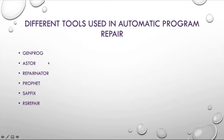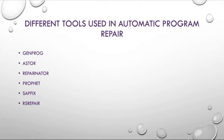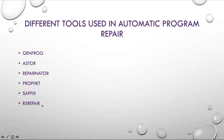Here are some of the different tools of automatic program repair. The first is Genprog, which is the earliest generate-and-validate bug fixing system for C programs. Aster is an automated repair library for Java and contains jgenprog, a Java implementation of Genprog. Repairnator is designed for modern development toolchains based on continuous integration and versioning. Profit improves the repair process by exploiting information available in a large database of software. Sapfix is a new AI hybrid tool created by Facebook engineers. RS Repair is a technique that uses random search to guide the fix generation process.